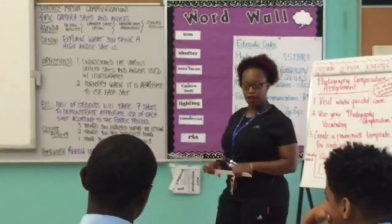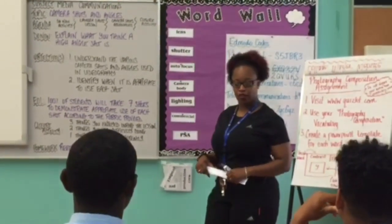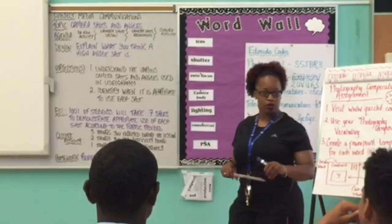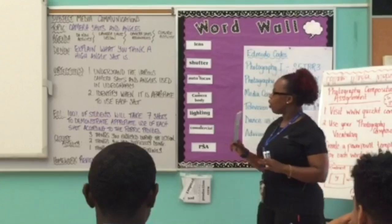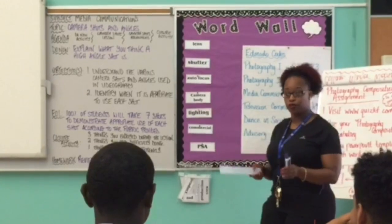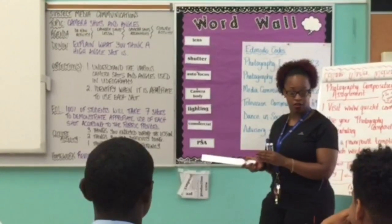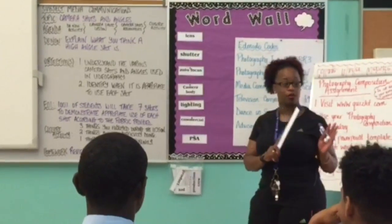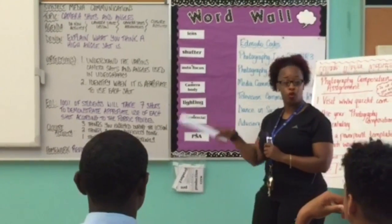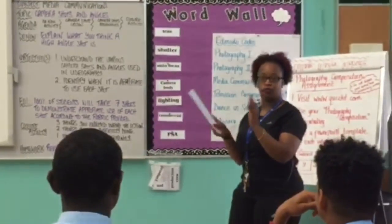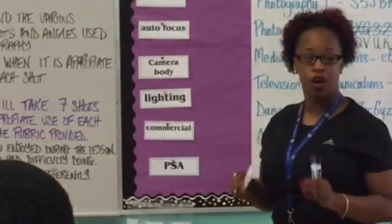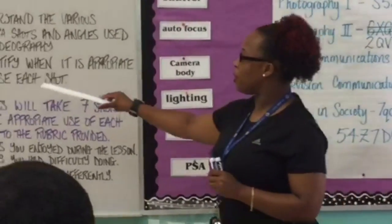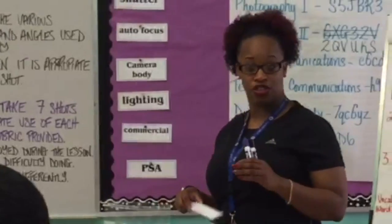Okay, good morning everyone. How are you this morning? Great. So today we're looking at camera shots and angles. We started to look at it last class, but this class we're looking at explaining how you use camera shots and angles appropriately for particular situations. So now that we know what camera shots and angles are, we're going to be able to use them appropriately for different situations or scenarios. Okay, so the objectives are to understand various camera shots and angles and use them for videography. We're going to review that, and then you're going to be able to identify whether it is appropriate to use each of these shots.